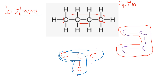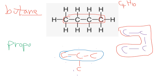Either way you count gives three carbons. Three carbons is 'prop', and there are no double bonds, so we call it propane. We've named the main chain circled in blue.